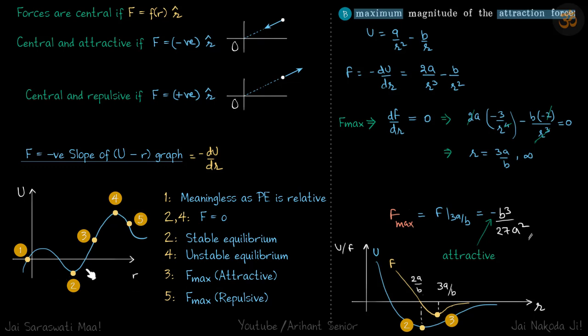If you move towards left and reduce R, the slope is negative. If slope is negative, minus dU by dR is positive, which means force is in plus R direction. It's going to return the object back into its equilibrium position, that's why it's stable. Point four is unstable for the same reasons.